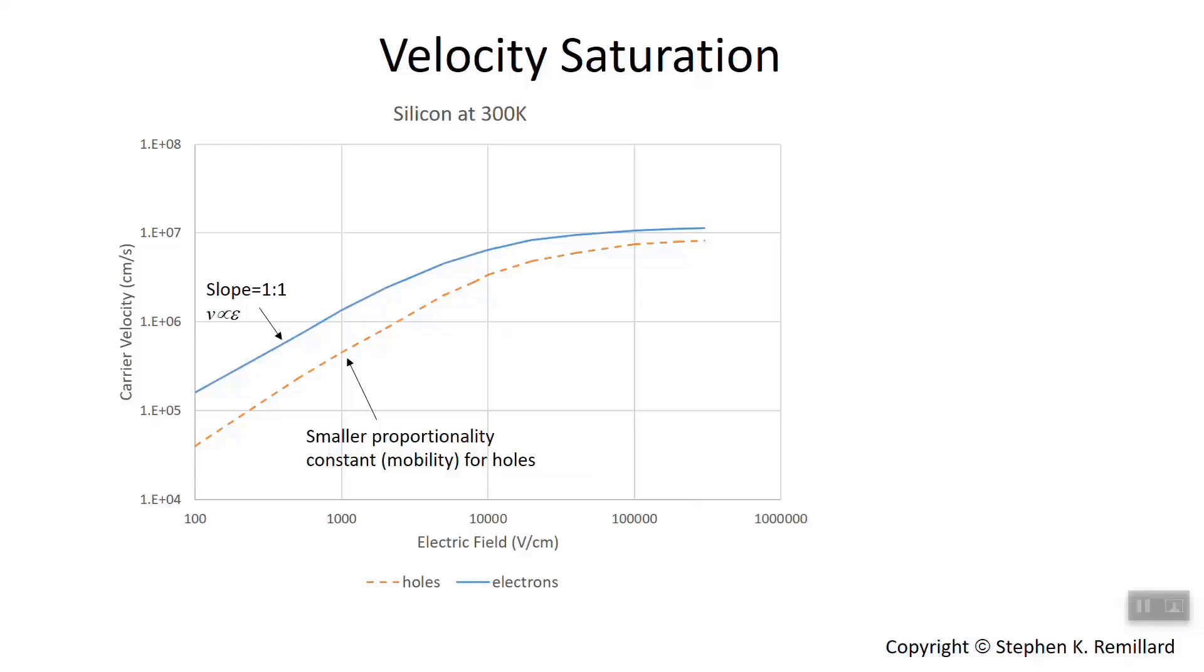I mentioned earlier that there's a speed limit for charge carriers inside of a semiconductor. That speed limit is set by collisions with high-energy phonon modes, and it's a little different for electrons and for holes. This graph in front of us for silicon at room temperature illustrates it fairly clearly.